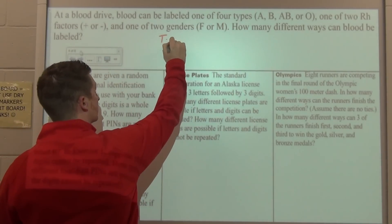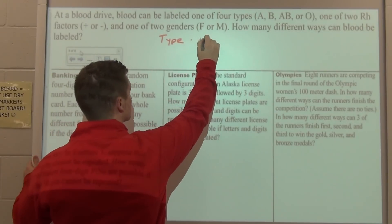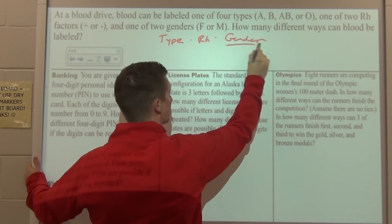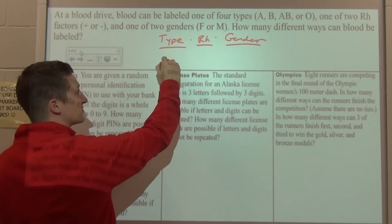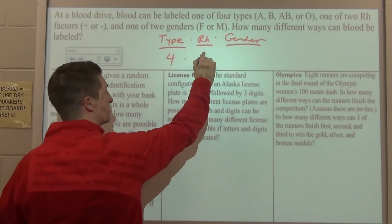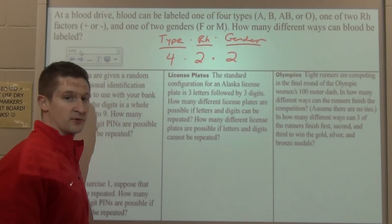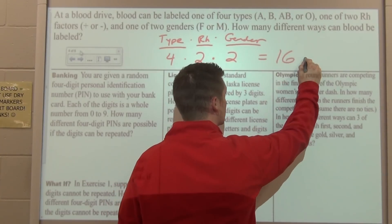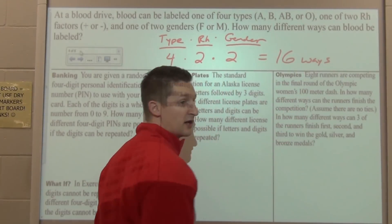So, I'm going to take the type times the RH factor times the gender. And I'll think about how many of each of those I have. Well, type, there's four different types, there's two different RH factors, and there's two different genders. Multiplying those together, four times two times two is 16 different ways in which we could label blood.